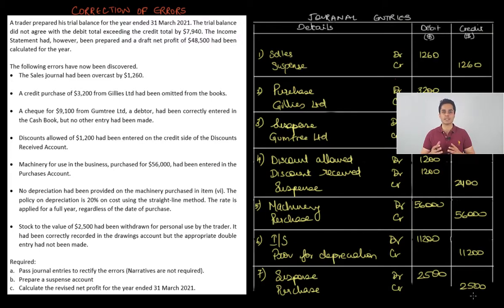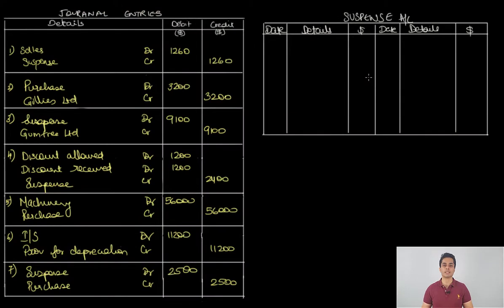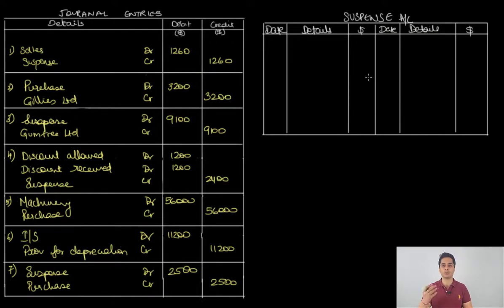Let's go to part B and prepare the suspense account using the same journal entries. We need to start the suspense account with the difference in the trial balance. Since the debit total exceeded the credit total by 7940, there will be a credit balance in the suspense account of 7940 — because the suspense amount is placed on the side with the lower total. So on the credit side, we start with: Difference in Trial Balance 7940.